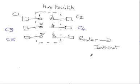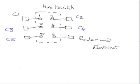In this video I want to look at hubs and switches, and to explain the difference between a hub and a switch. I've got a little schematic here of a hub or a switch — it's a six-port device, and I've got computers connected to those ports: computer one connected to port one, etc., and on port six I've got a connection to the router, which connects out to the internet.